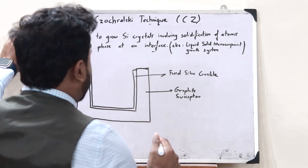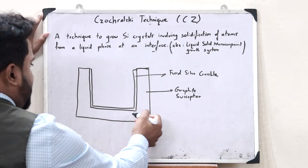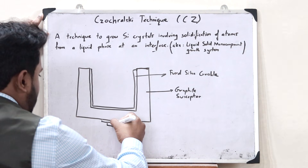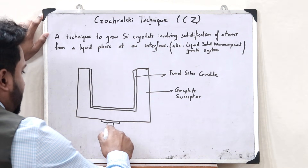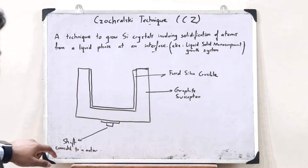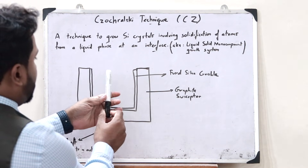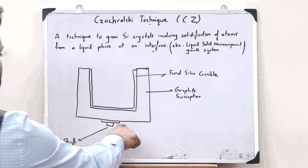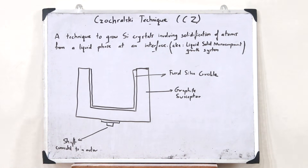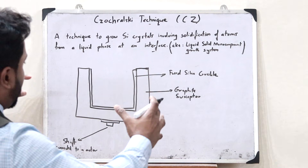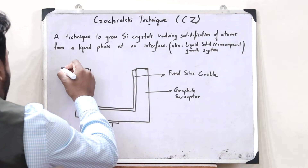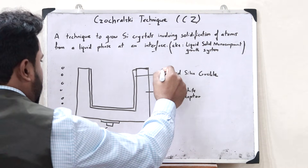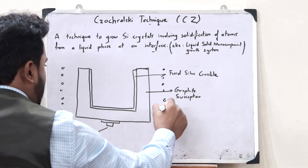Let us see the other components of this particular furnace. This graphite susceptor is connected to a particular pedestal, and the shaft of this pedestal is connected to a particular motor so that we obtain a rotation. In order to provide heat for the purpose of heating this entire apparatus, RF coils are placed around it — that is, we provide resistive heating to the entire apparatus with the help of RF coils.